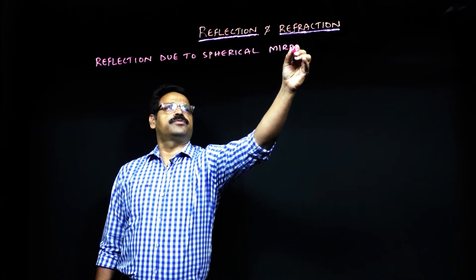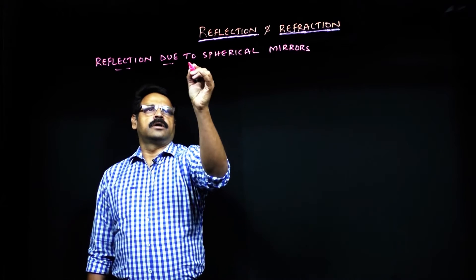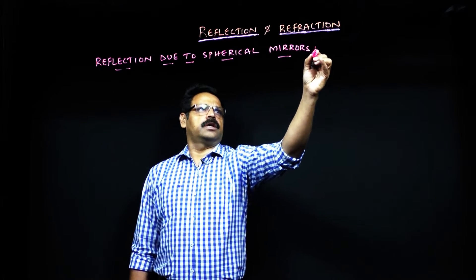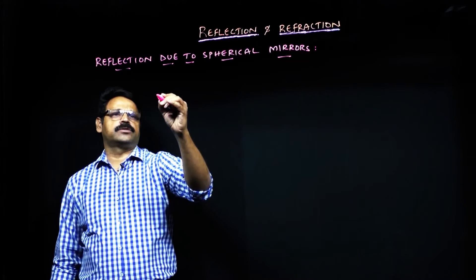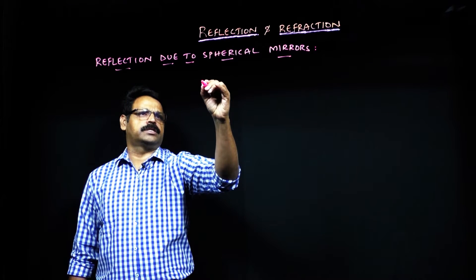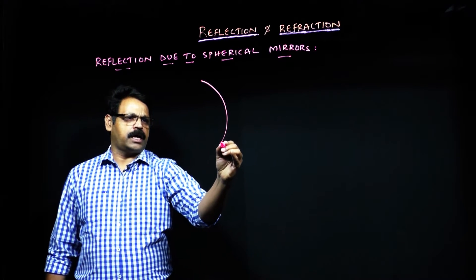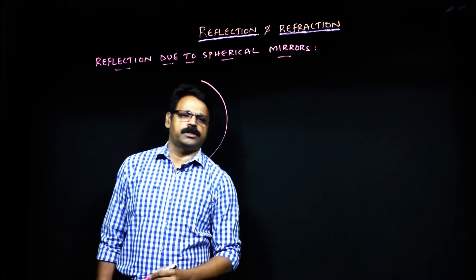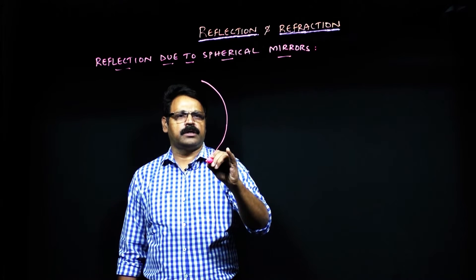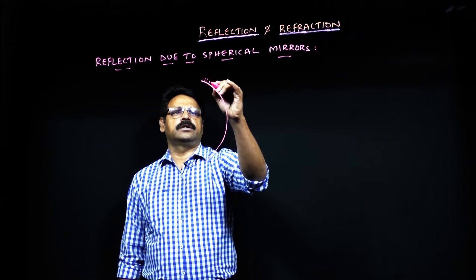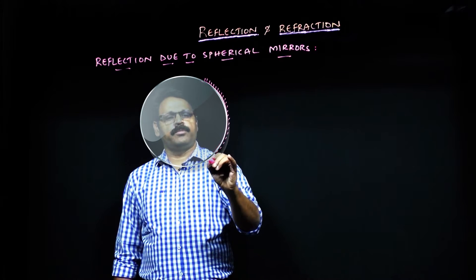There are two different types of mirrors: one is concave and the other one is convex. For the sake of convenience, I am looking at one curved surface irrespective of whether it is concave or convex. This is the curved surface, and if it is supposed to be the concave mirror, then this side is going to be polished — so this is the concave mirror.